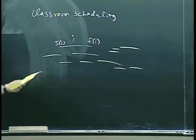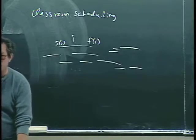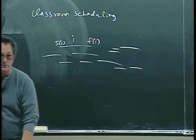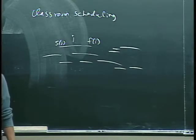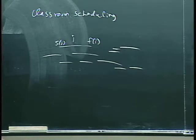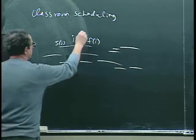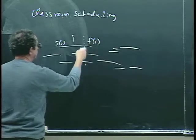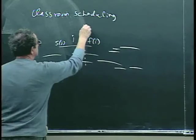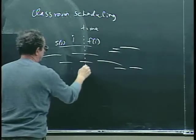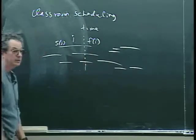Unlike the other scheduling problem that we looked at, the problem isn't to choose which intervals. We have to schedule all of them. All the classes have got to be scheduled, but each class has got to be put into a classroom. And you can't have two classes in the same classroom. So if you have three classes that have to be scheduled at the same point in time, which is time here, then you know you need at least three classrooms.